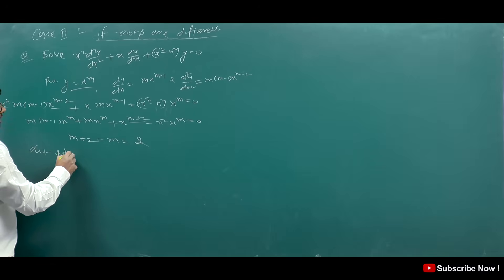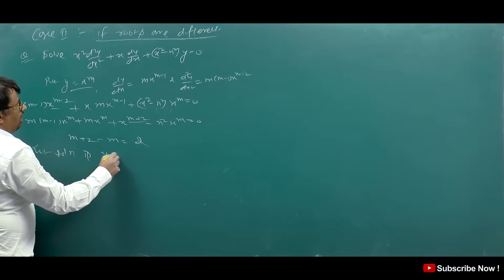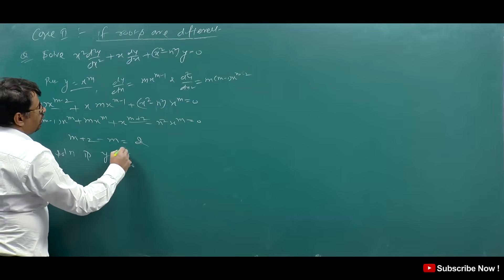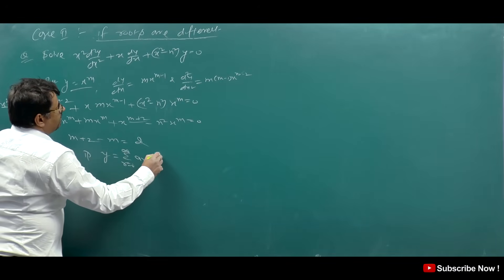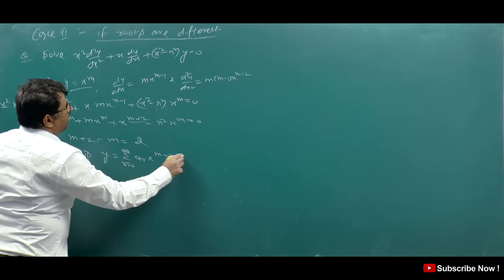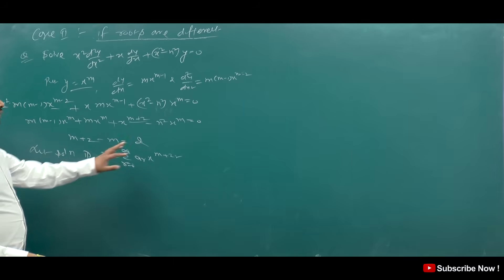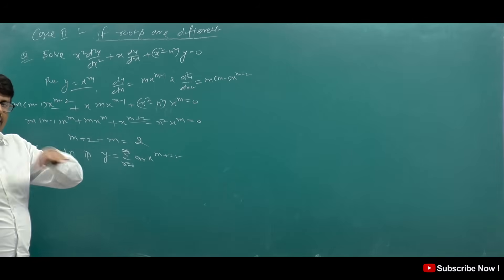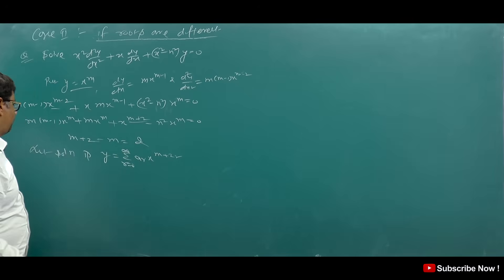Let the solution be: y = Σ (r=0 to ∞) aᵣ · x^(m+2r). Since the difference in degrees is 2, we use steps of 2r. In the previous video I had explained this same approach.